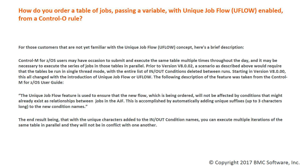Starting in version V8, this all changed with the introduction of unique job flow, or uFlow. The following description was taken from the Control-M for ZOS user guide: the unique job flow feature is used to ensure that the new flow being ordered will not be affected by conditions that might already exist as relationships between jobs in the active jobs file. This is accomplished by automatically adding unique suffixes, up to three characters long, to the new condition names, so you can execute multiple iterations of the same table in parallel without conflict.